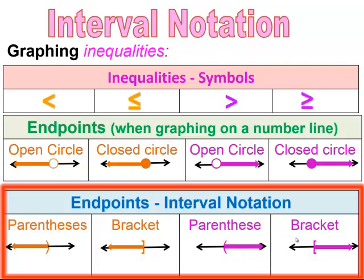If we have a less than, instead of using an open circle on our graph, we'll use an open parentheses to indicate it's less than but does not include the number. When we have a less than or equal to, you'll use a bracket to include the number. With the greater than or greater than or equal to: if it's just greater than, you have an open parentheses — notice the direction of the parentheses will be open in the direction you'll be shading. If you have the greater than or equal to, you'll use a bracket instead of the closed circle, and the bracket will go in the direction of the shading, so you'll be shading to the right.